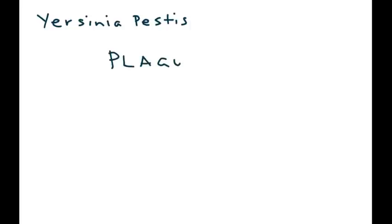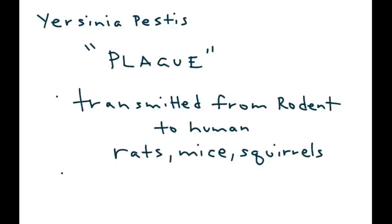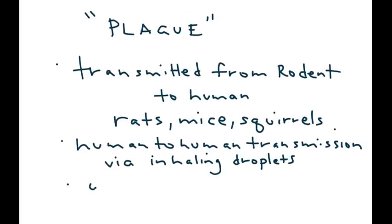Yersinia pestis is famous for causing a very severe medical condition known as the plague. Plague occurs worldwide and is notorious for being transmitted to humans from rodents — in particular, rats, mice, and squirrels. Human-to-human transmission then occurs via inhaling droplets.